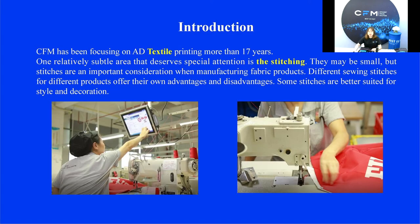For fabric, one relatively subtle area that deserves special attention is in the stitching. They may be small, but stitches are an important consideration when manufacturing fabric products. Different sewing stitches for different products offer their own advantages and disadvantages. Some stitches are better suited for style and decoration. Understanding these stitches used in manufacturing can help you learn more about the fabric and products. So let's unravel the mystery behind common and unique stitches to examine their pros and cons.